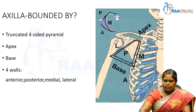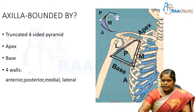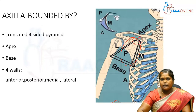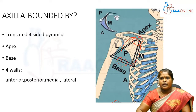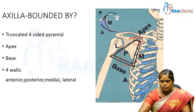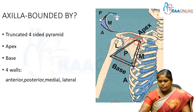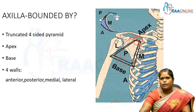Here again we can see this axilla as a truncated, blunt, four-sided pyramid. This pyramid presents a truncated apex, base, and four walls — namely the anterior wall, opposite to which will be the posterior wall. Then there will be a medial wall along the ribcage, and we have medial and lateral walls.